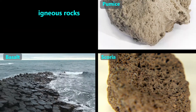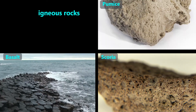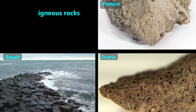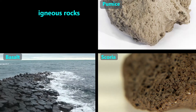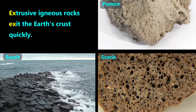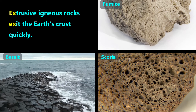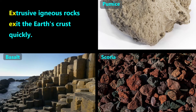Pumice, scoria, and basalt are made from lava that comes from volcanoes. Since all three of these igneous rocks come from volcanoes and are cooled relatively quickly by either the air or water, we call them extrusive igneous rocks. The word extrude means to push something out — it sounds similar to exit. Geologists use the word to mean that the magma exited the Earth's crust quickly.